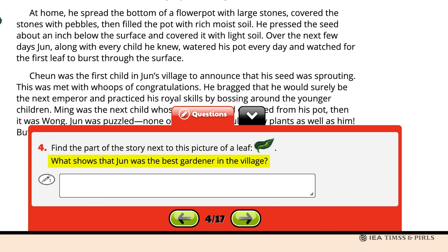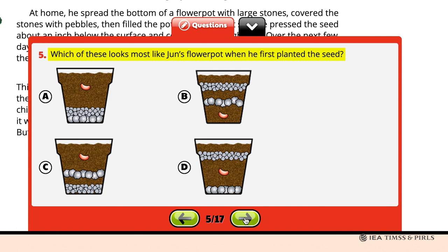Question 5 asks which of the four images of flowerpots looks most like Jun's flowerpot when he first planted the seed. Students should drop the question, read the text, bring back the question, and click on Option A, because the seed is about an inch below the surface and the stones are at the bottom. In Question 6, students are asked what the part of the story next to the picture of a flower shows about Jun. Students should click on Option C: that he planted the seed with care.